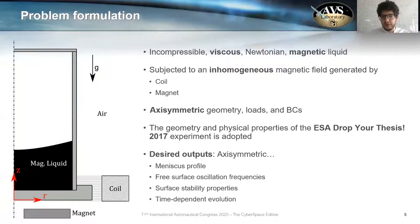So let's formulate the problem first of all. We have an incompressible viscous Newtonian magnetic liquid that is located in a container that we are going to assume cylindrical for now in resemblance to the AdlerGiorgi thesis 2017 experiment. We are going to consider an inhomogeneous magnetic field generated by either a coil or a magnet or both of them. And our desired outputs are the axisymmetric meniscus profile, free surface oscillation frequencies, surface stability properties, and also the time-dependent evolution of the system.